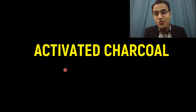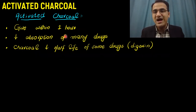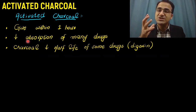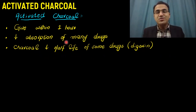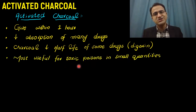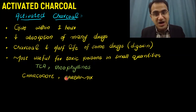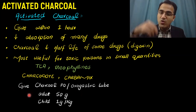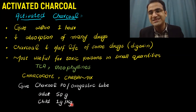Activated charcoal has a very important role in poisoning management. If you have activated charcoal, gastric lavage and emetics should be avoided. It can be given within one hour; after one hour its role is reduced as the poison has already been absorbed. It reduces the absorption of many drugs and in some cases reduces the drug's half-life — for example, it is very effective in digoxin poisoning. It is available as Charcodote or Carbomix. In adults, give 50 grams; in children, 1 gram per kg.